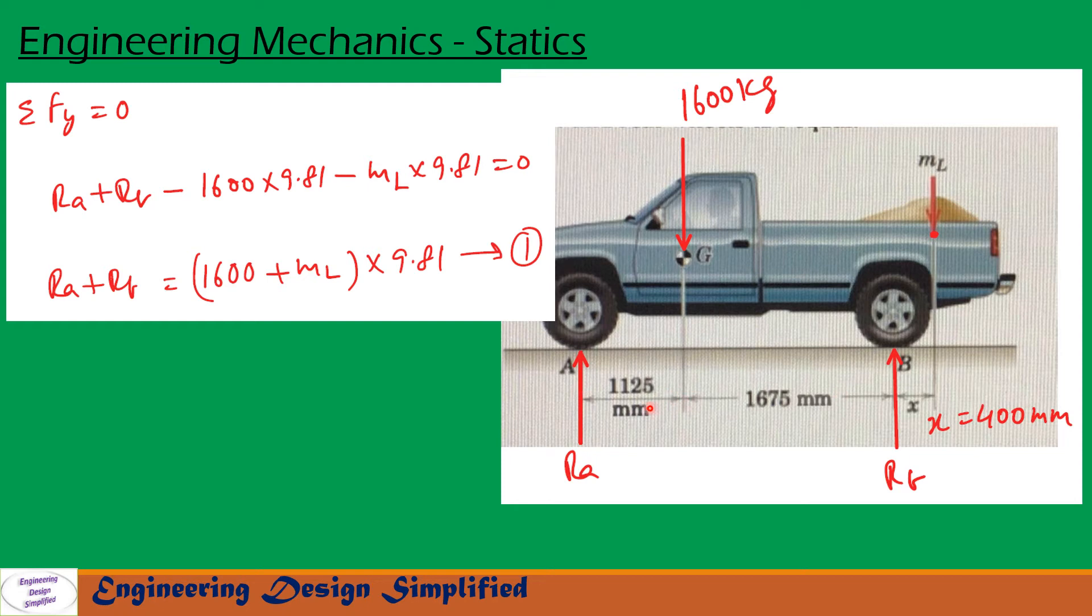So the reaction at A is RA acting vertically upwards and the reaction at B is RB that is also acting vertically upwards. So the distance from here to here is 1125 mm, from here to here is 1675 mm, from here to here is 400 mm. Now let us write sigma Fy equal to 0. So these two forces are acting vertically downwards, these two forces acting vertically upwards. So RA plus RB minus 1600 into 9.81 minus ML into 9.81 equal to 0. So 9.81 is acceleration due to gravity. Now rearranging this equation, we will get RA plus RB equal to 1600 plus ML into 9.81. Let us call this equation 1.